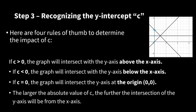What are the rules of thumb for this? So, if c is greater than 0, it means that it intersects above the y-axis. This is an example. It intersects at y equals 2. If c is less than 0, then the graph will intersect below the y-axis. If c equals 0, then the graph will intersect at the origin. The origin is this point, which means coordinates 0 and 0.